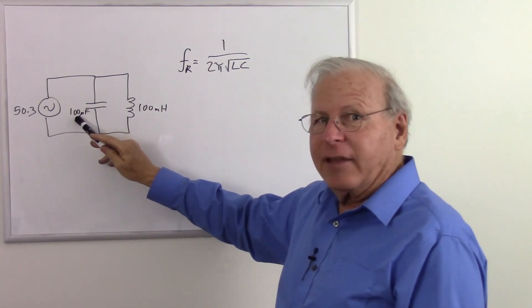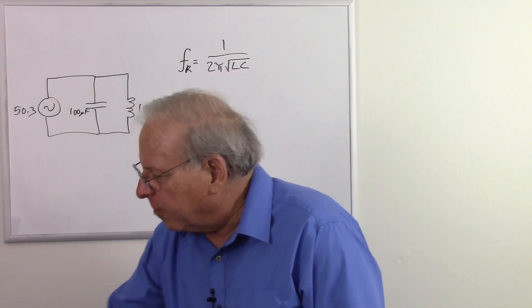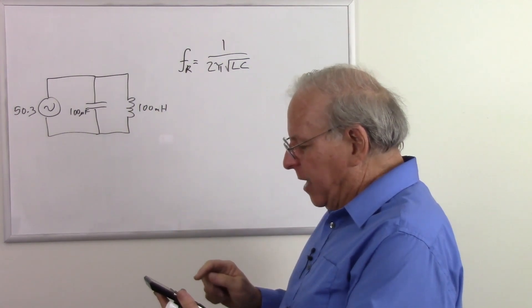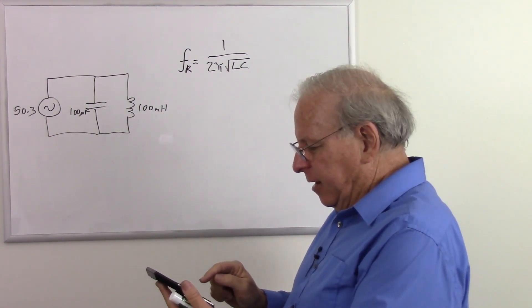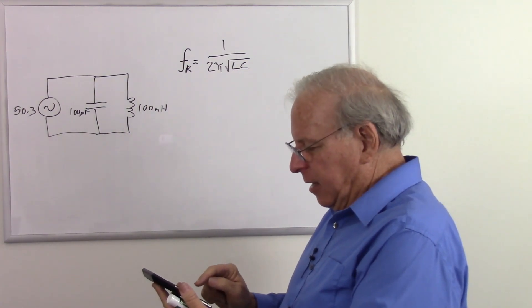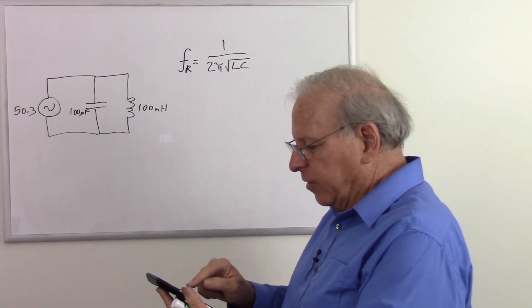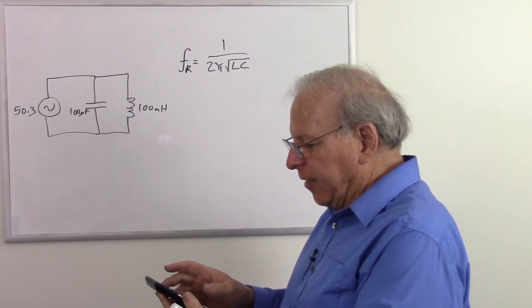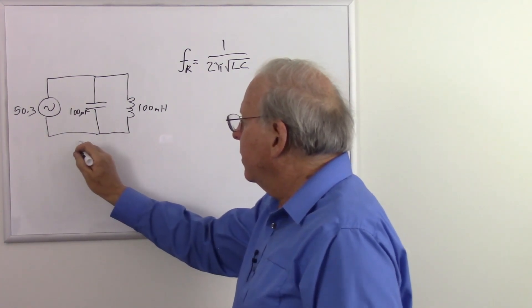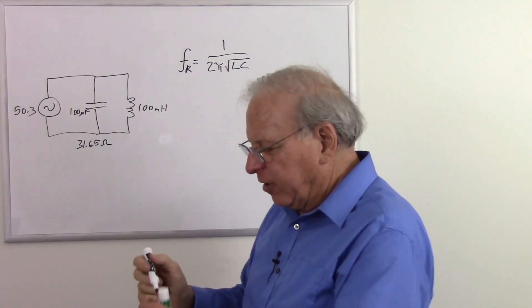So let's calculate the capacitive reactance and the inductive reactance at the resonant frequency. So capacitive reactance is 1 over 2πFc. So that's going to be 6.28 times 50.3 times 0.0001 equals, take the reciprocal, and I got 31.65 ohms of capacitive reactance.